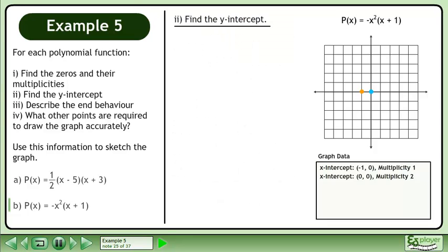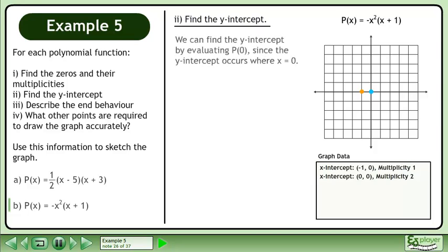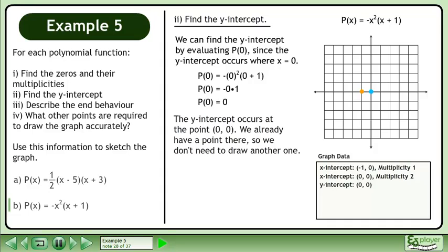Next we'll find the y-intercept. We can find the y-intercept by evaluating p at 0 since the y-intercept occurs where x equals 0. Replace the function input with 0 and evaluate — the result is 0. The y-intercept occurs at the point (0, 0). We already have a point there so we don't need to draw another one.